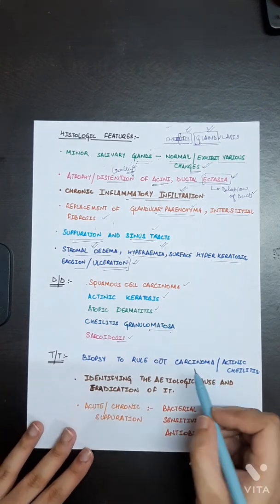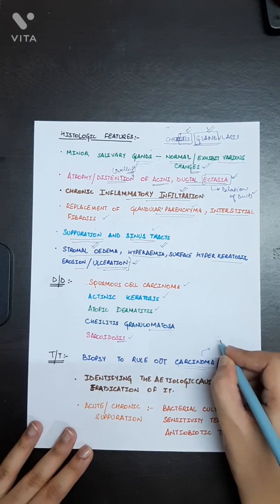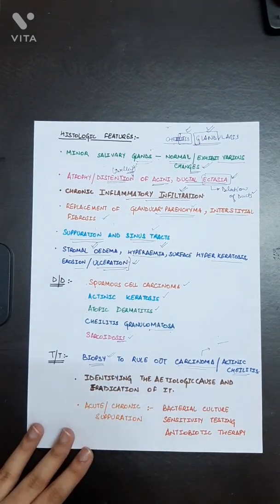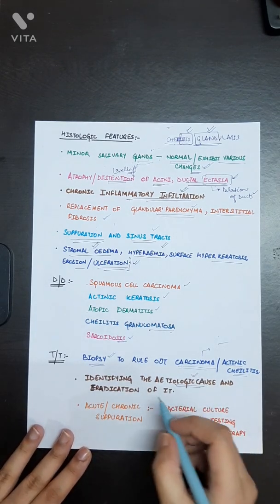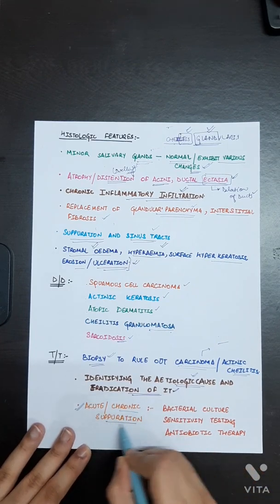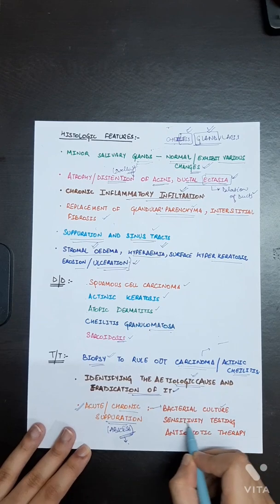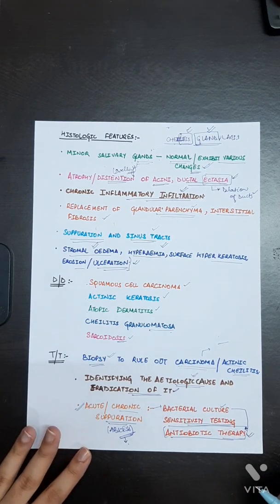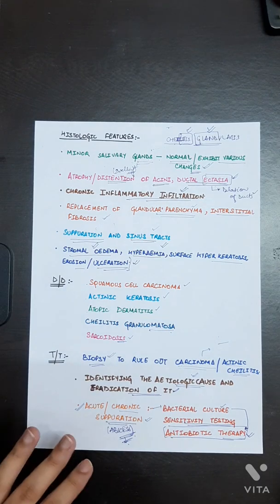For treatment, a biopsy should be done to rule out carcinoma or actinic keratosis, since Cheilitis Glandularis can progress to Squamous Cell Carcinoma. The causative agent should be identified and eradicated. For acute or chronic suppuration, bacterial culture and sensitivity testing should be performed, followed by appropriate antibiotic therapy.